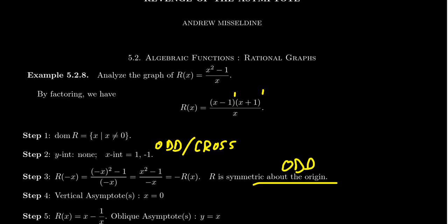In terms of vertical asymptotes, we have the factor x in the denominator. Since x = 0 causes division by zero and the function is in lowest terms, this gives us a vertical asymptote at x = 0. Its multiplicity is also 1, which is odd, so we're going to cross infinity at this vertical asymptote.